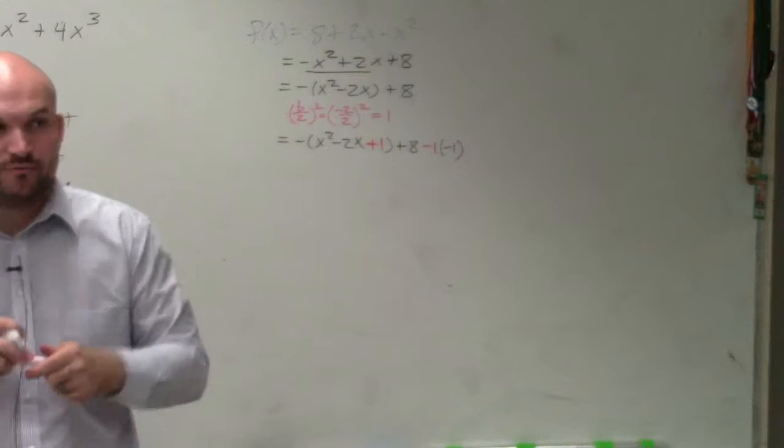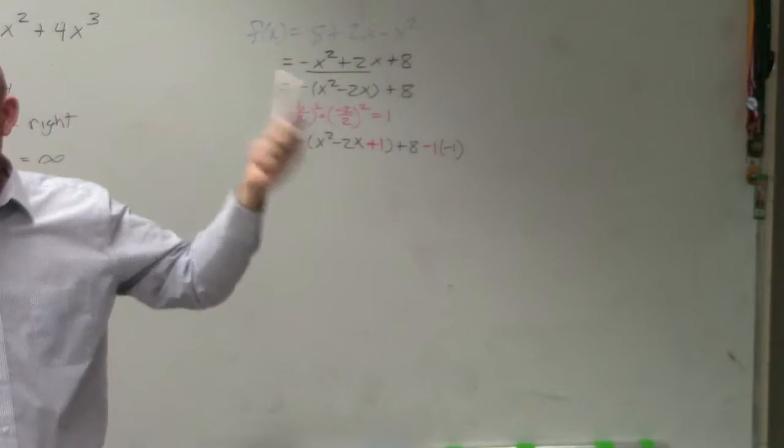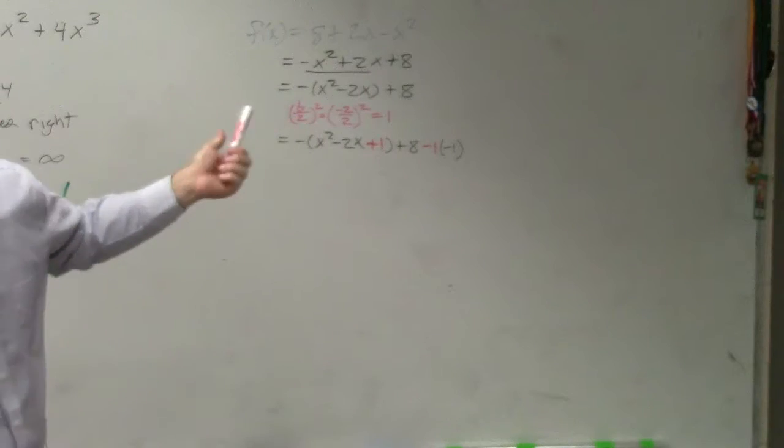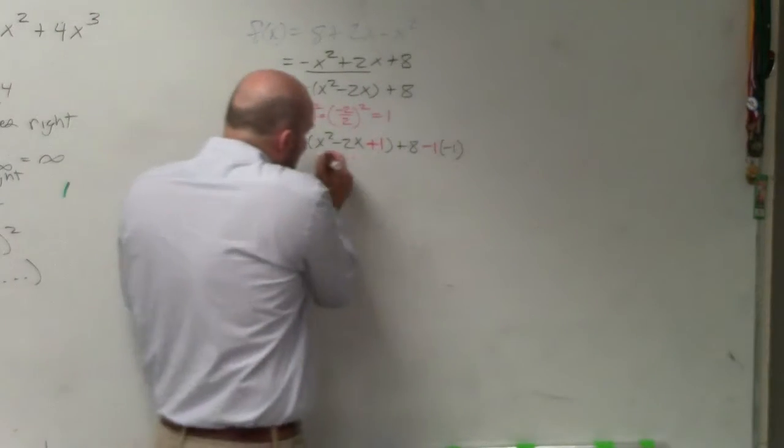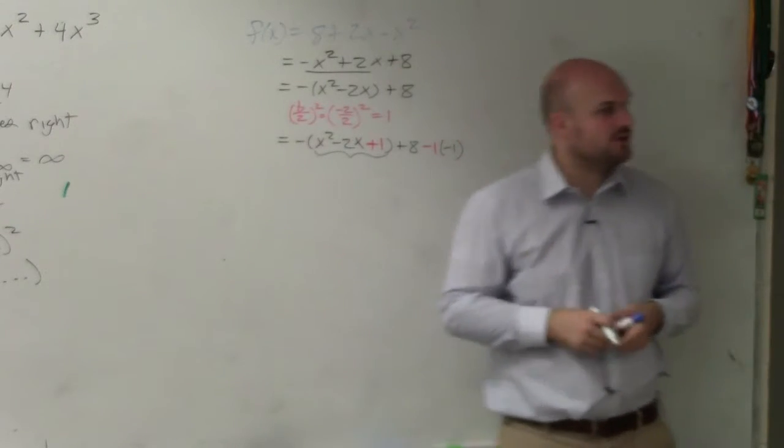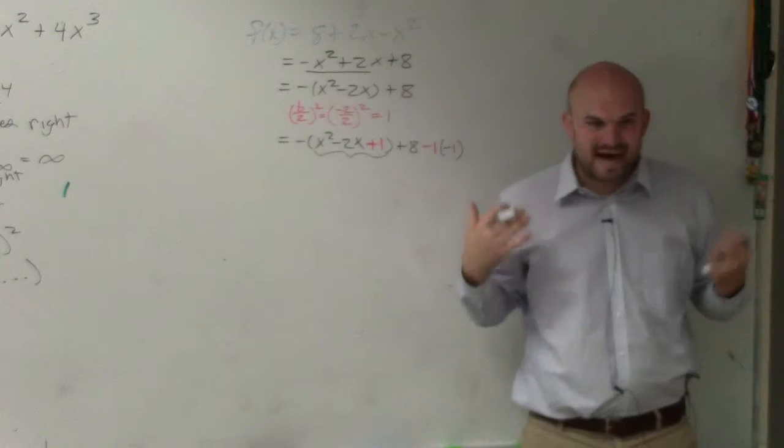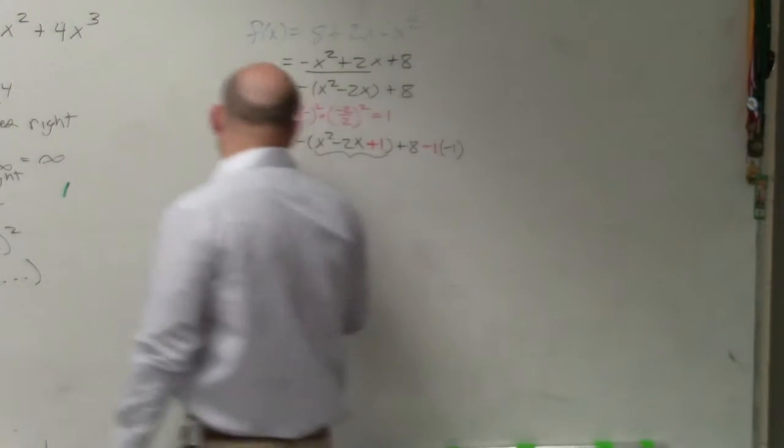Now, by doing what is in red, what I did was I created a perfect square trinomial. And that's what completing the square is so helpful for. Why are perfect square trinomials so important to create? Because they factor down to binomial squares, which allows us to write vertex form.